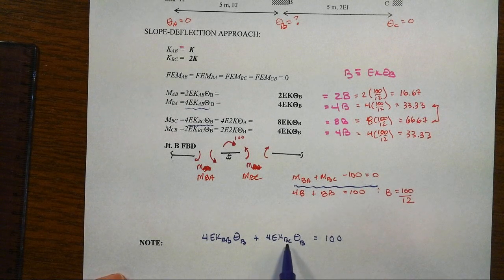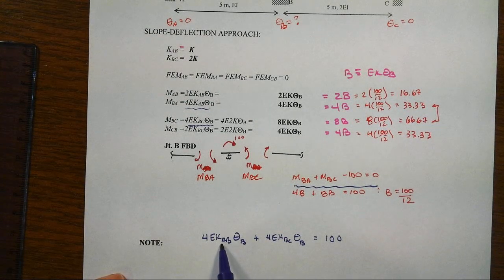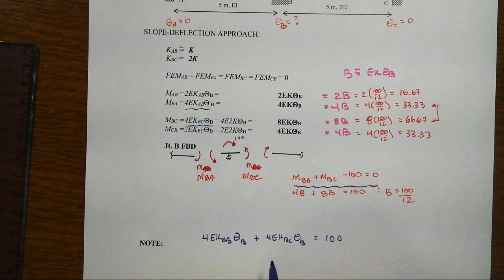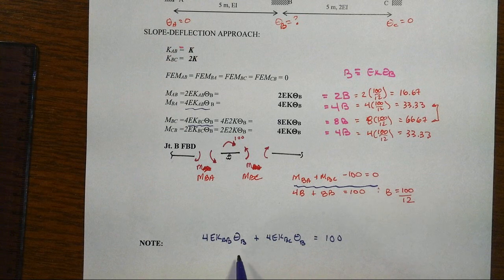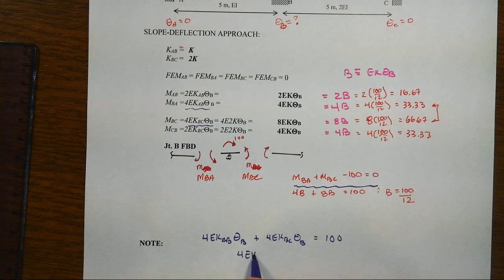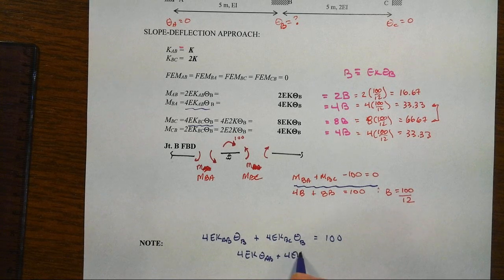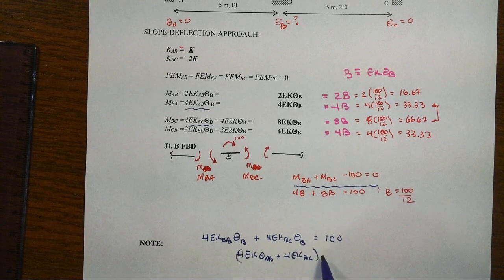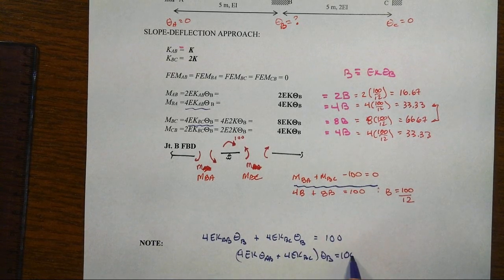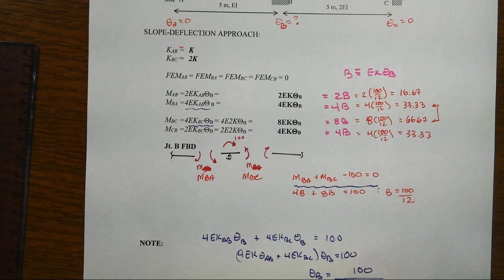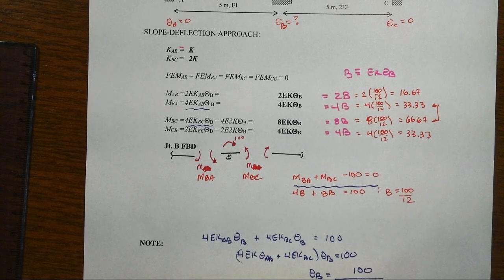Right now, I haven't substituted in the more generic values of K yet, right here, partly because I want to illustrate something here. So we can factor out then the thetaB that equals 100, then we got thetaB equals 100 over then the 4EKAB plus the 4EKBC.